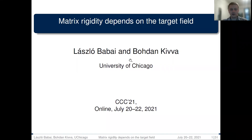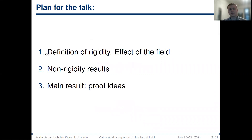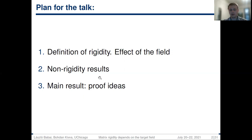Hello, everyone. My name is Bohdan Kiva, and in this talk I'm going to present results from the joint paper with my advisor, Laszlo Babai, titled "Matrix rigidity depends on the target field." This talk consists of three parts. In the first part, I will discuss the definition of matrix rigidity and the effect of the field on this definition. In the second part, I will briefly mention recent non-rigidity results and corollaries we obtained. And in the third part, I will briefly discuss key ideas behind our main result.